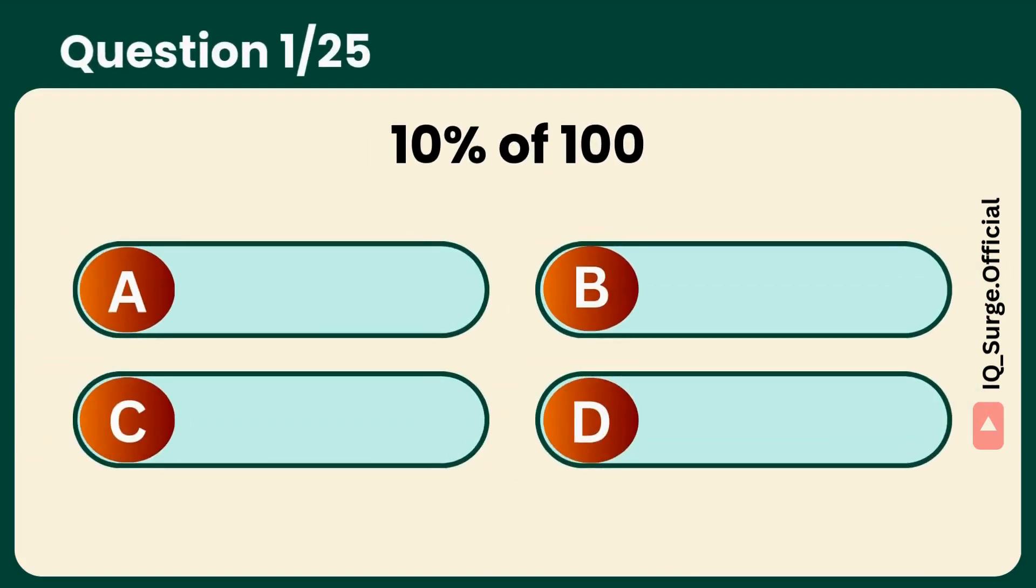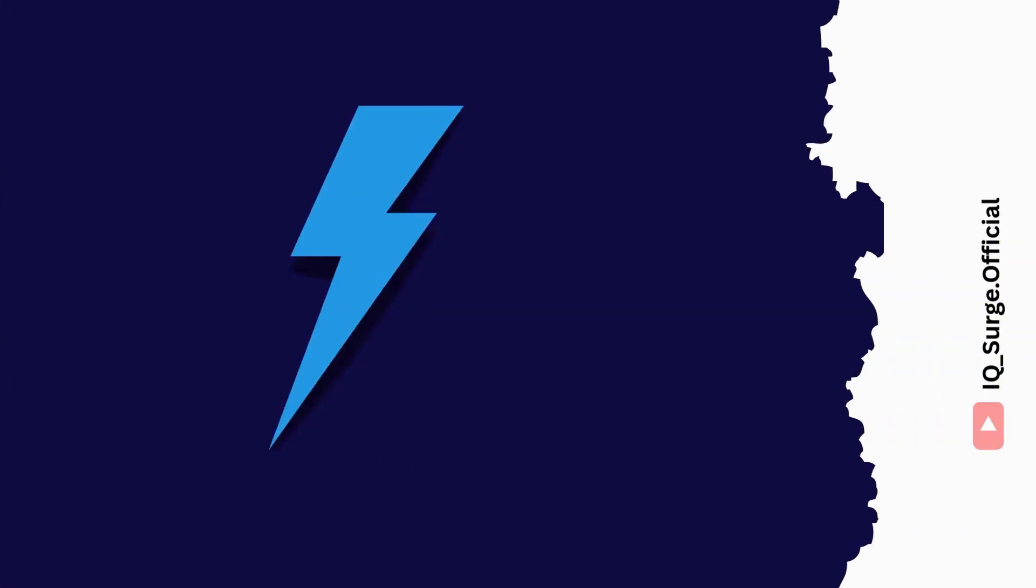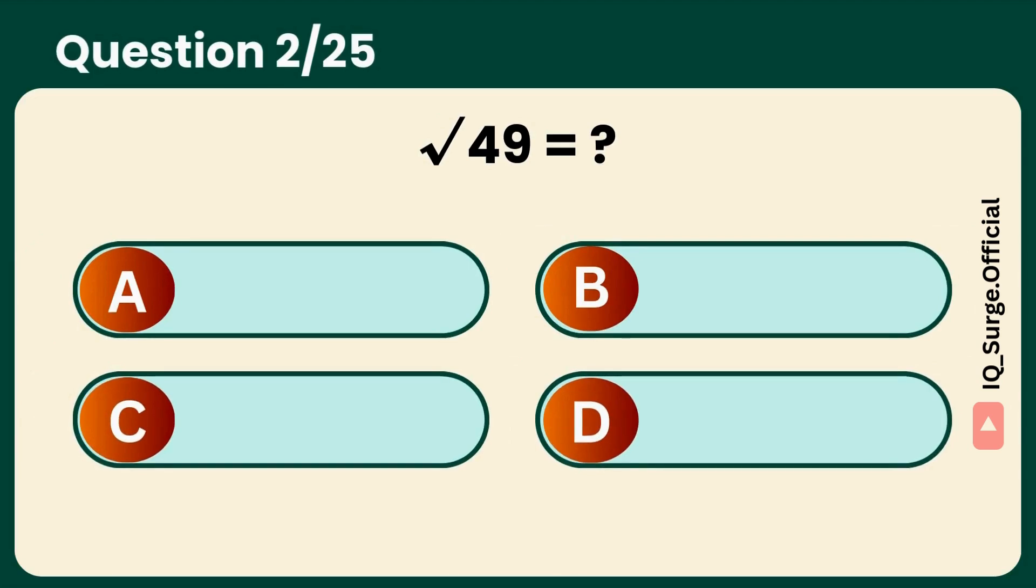What is 10% of 100? What is the result of the square root of 49? Perfect square test. Let's see your speed. Answer: 7. Easy peasy, just testing your brain's engine.